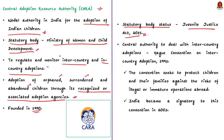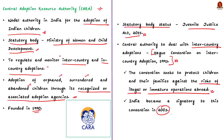This nodal body is designated as the central authority to deal with inter-country adoption as per the provisions of the Hague Convention on Inter-Country Adoption 1993. The Hague Convention on Inter-Country Adoption seeks to protect children and their families against the risk of illegal or immature operations abroad. Note that India became a signatory of the convention in 2003.